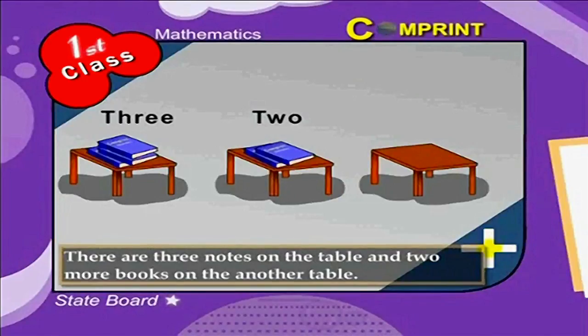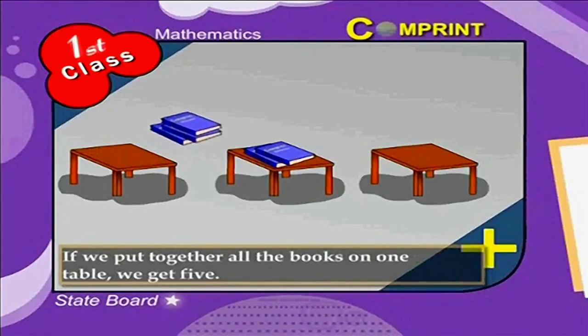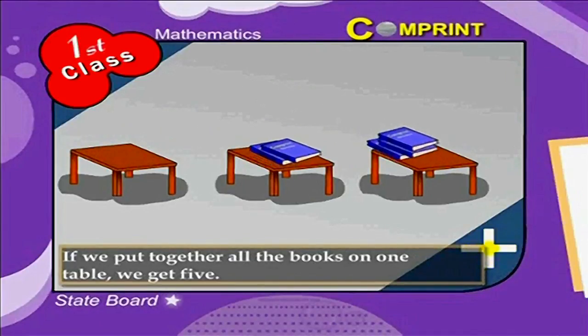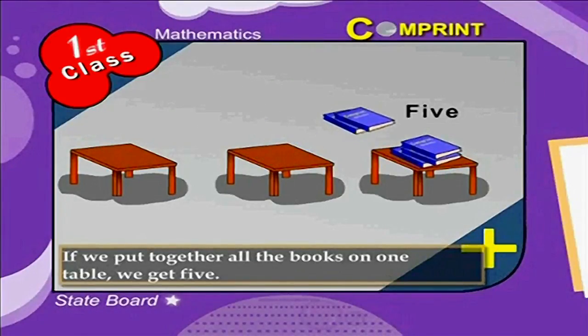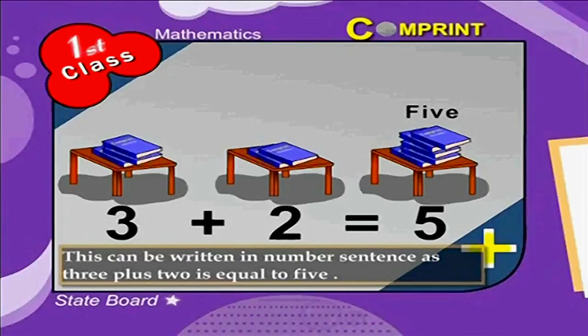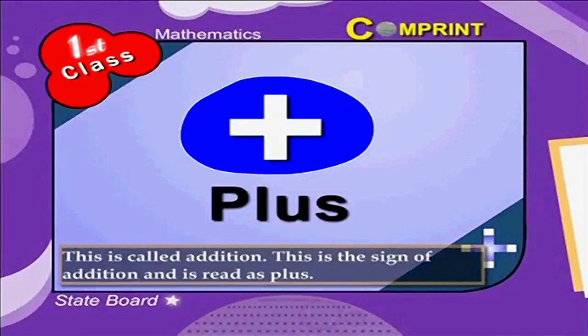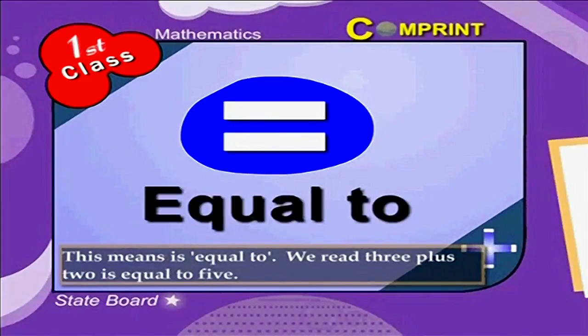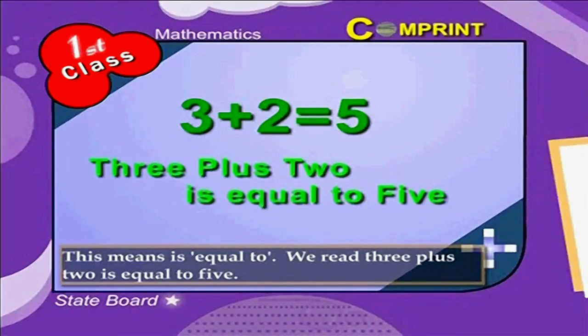Have an example. There are three notes on the table and two more books on another table. If we put together all the books on one table, we get five. This can be written in number sentence as three plus two is equal to five. This is called addition. This is the sign of addition and is read as plus. This means is equal to. We read three plus two is equal to five.